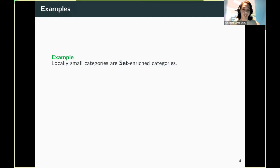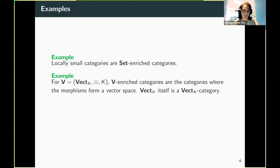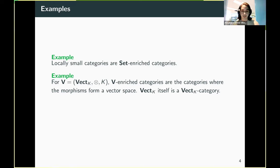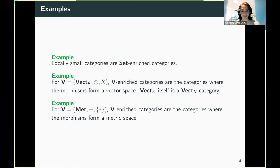We call the monoidal category we use to enrich some category C the base of enrichment. For example, locally small categories are called set-enriched because all the morphisms form a set. We have the category of vector spaces for some field K with the Kronecker product — V-enriched categories for V being the category of vector spaces are categories where the morphisms form a vector space. For example, this category is enriched over itself because linear maps also form a vector space. We also have that if you have the category of metric spaces, a category enriched over it is one where you can have a notion of distance.